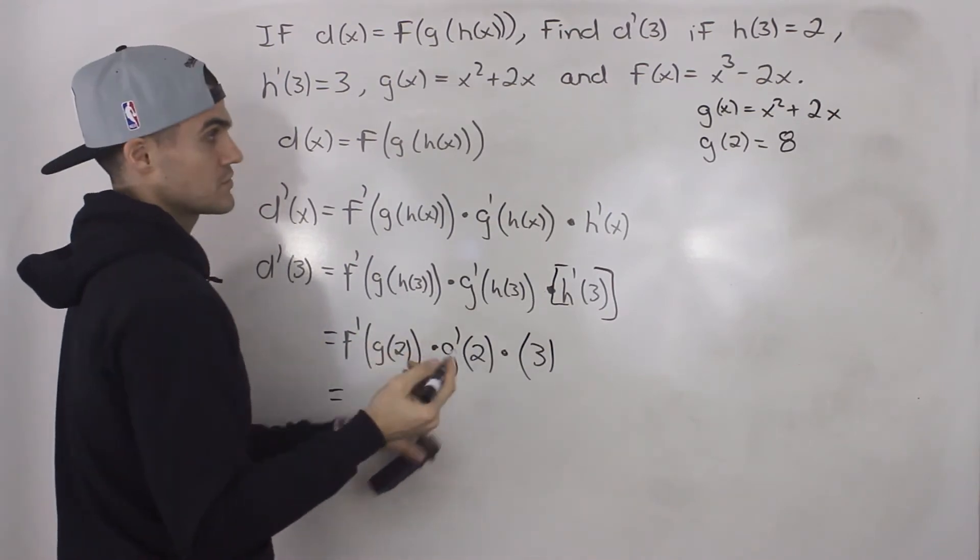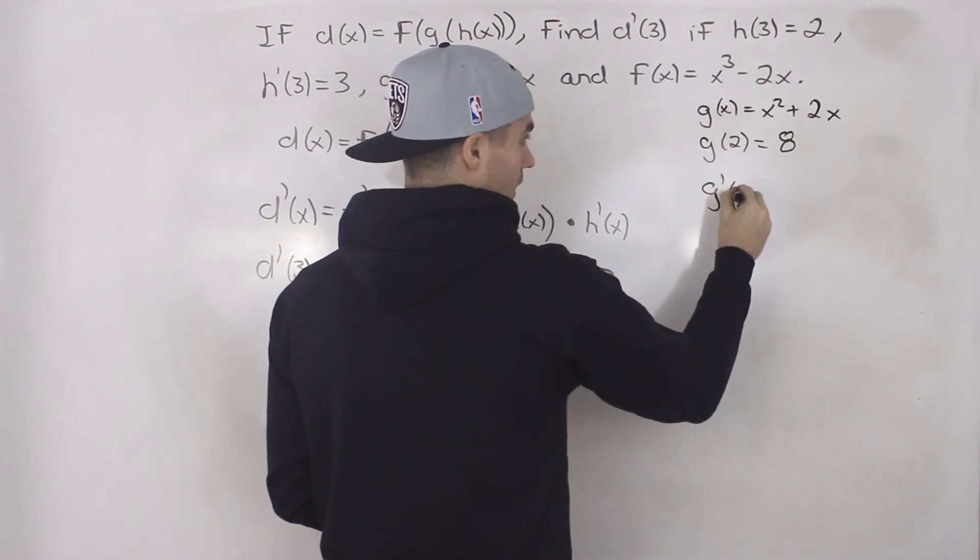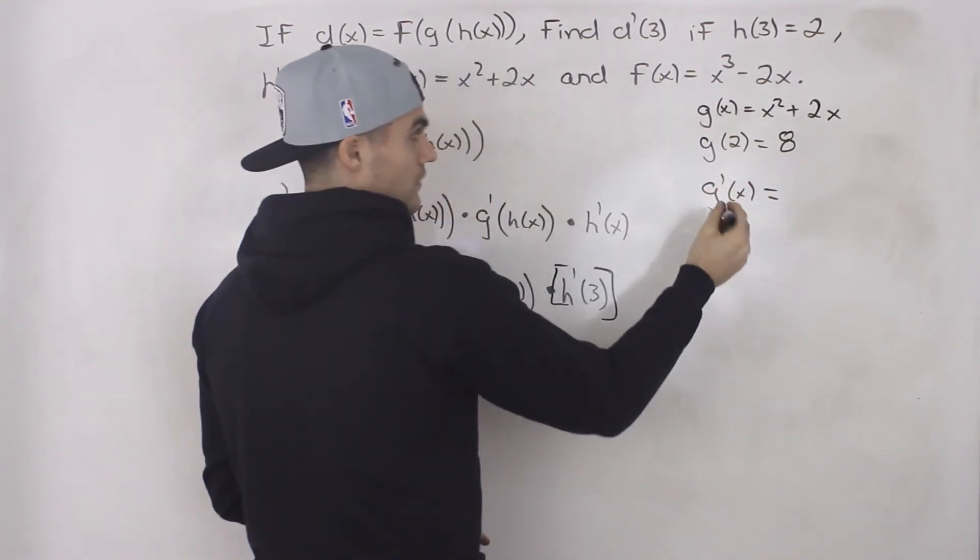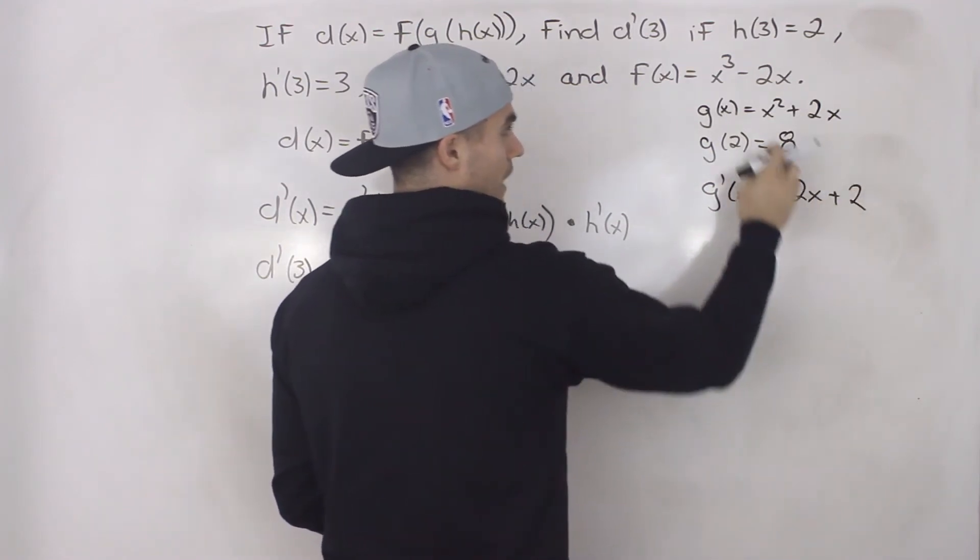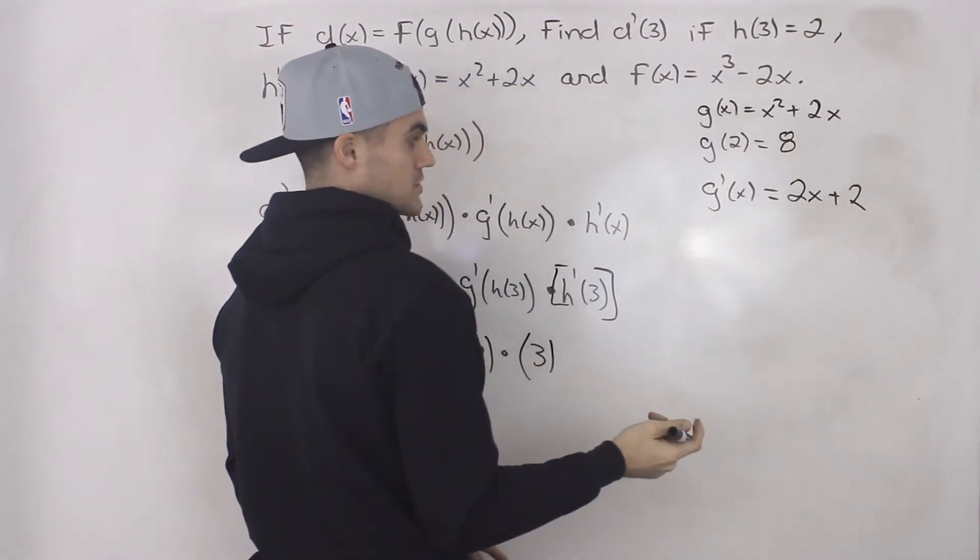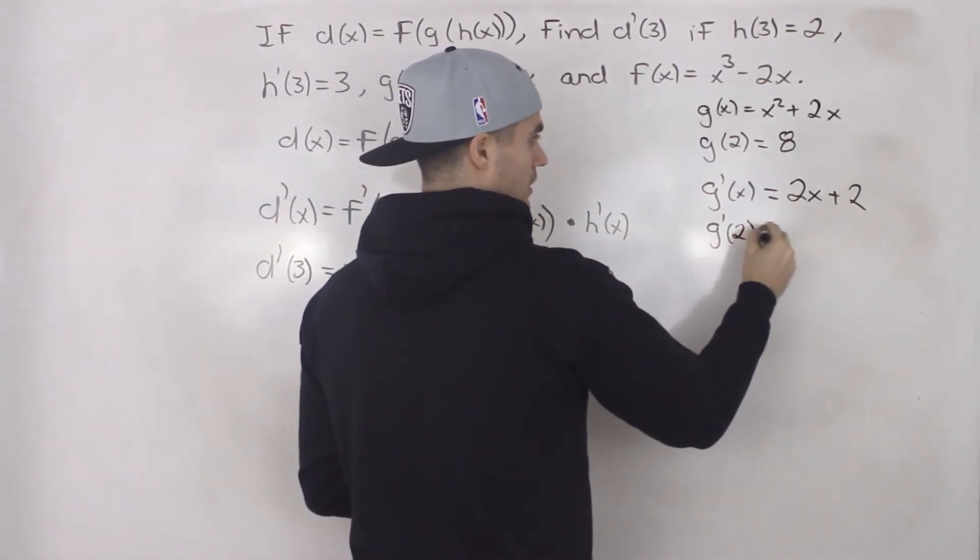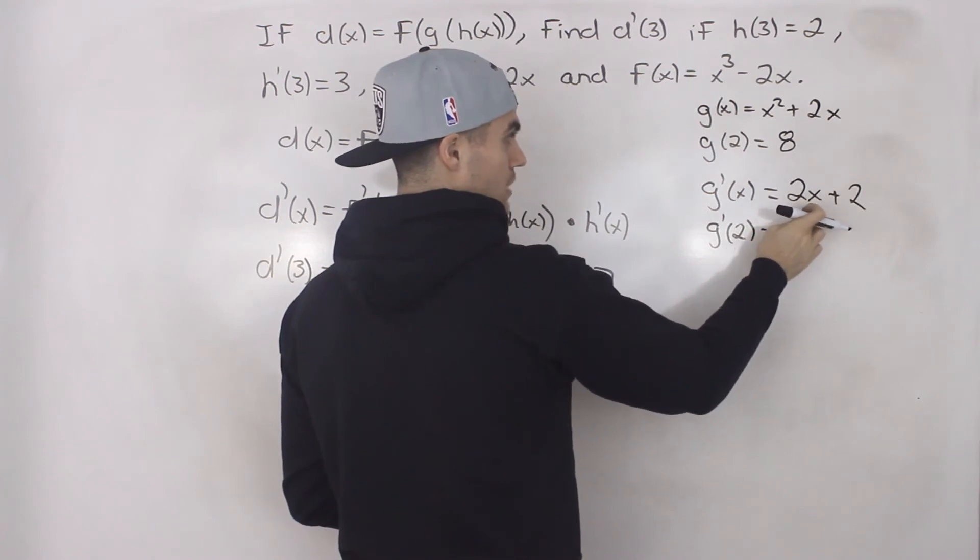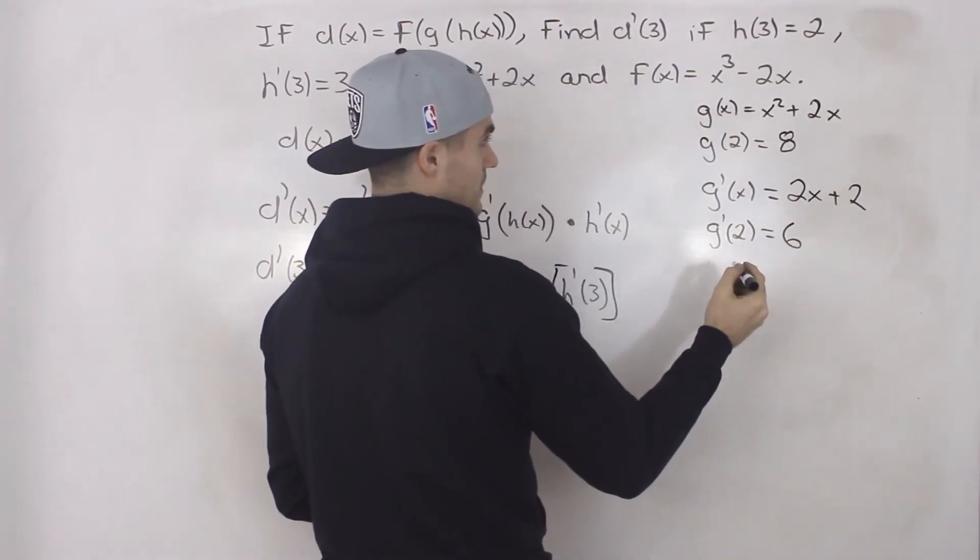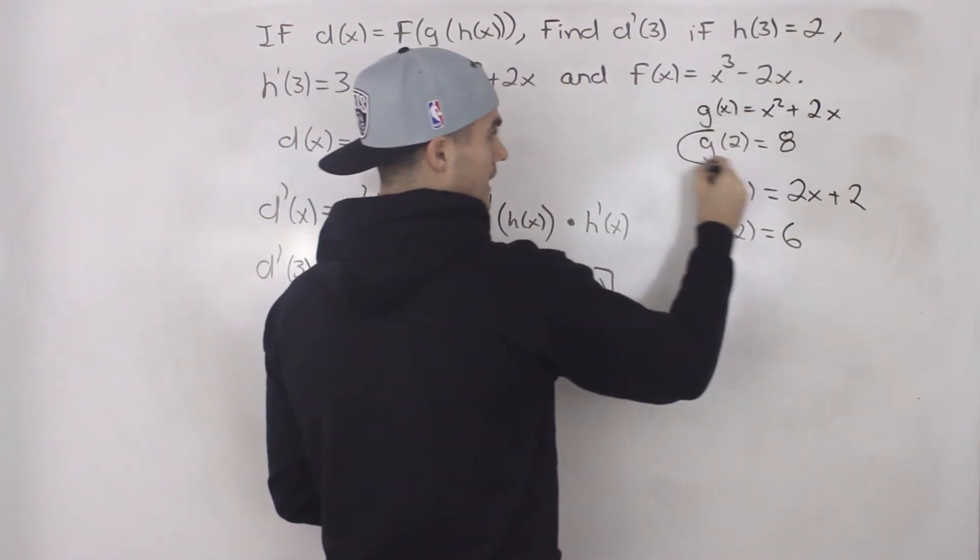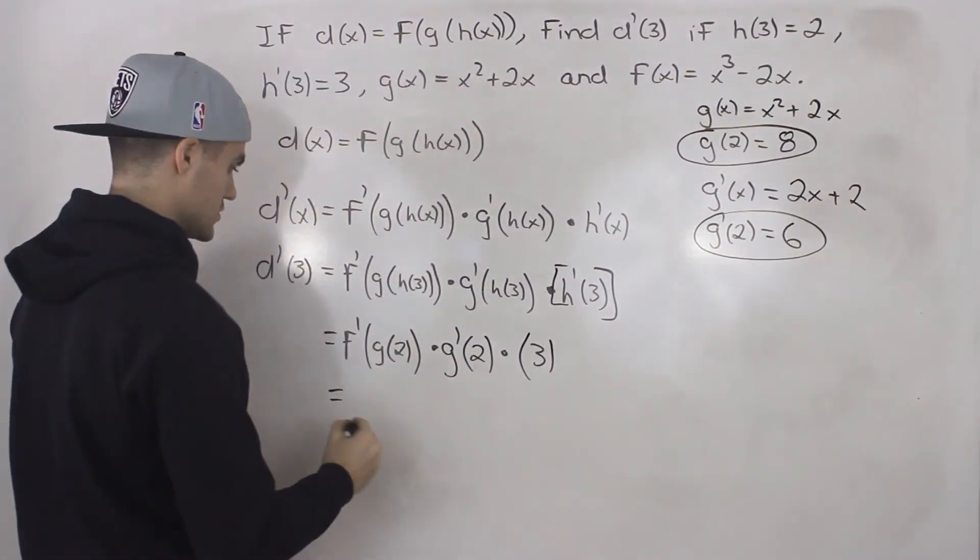And we also have to find g prime of 2. So what we can do is we can take the function g of x and just find its derivative, g prime of x, which would be 2x plus 2, when we apply the power rule to these two expressions. So then g prime of 2, that will be simply plugging in 2 for this x value. 2 times 2 is 4 plus 2 gives us 6. So we did that on the side. And now we can plug in 8 for g of 2 and 6 for g prime of 2.